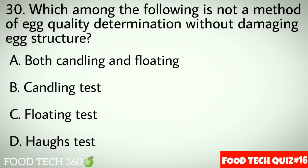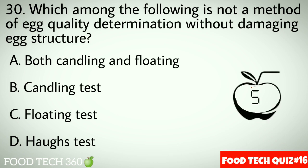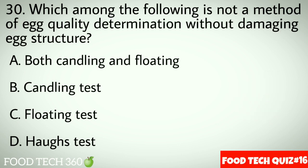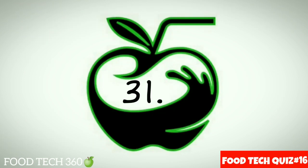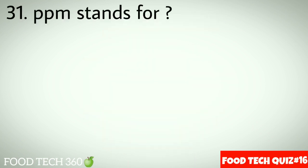Question No.30: Which among the following is not a method of egg quality determination without damaging egg structure? Options A: Both Candling and Floating. B: Candling test. C: Floating test. D: Hawks test. Correct answer D: Hawks test.